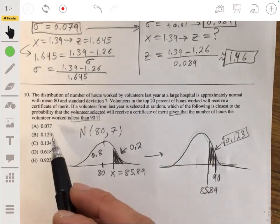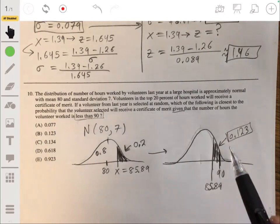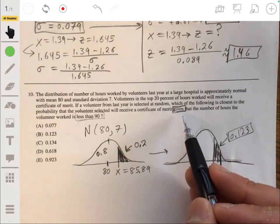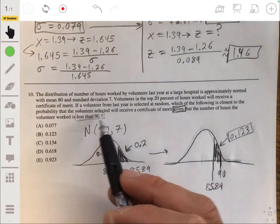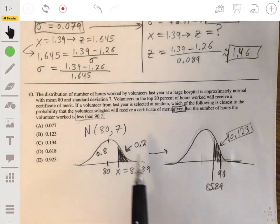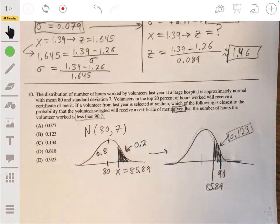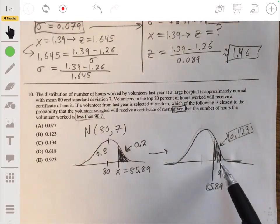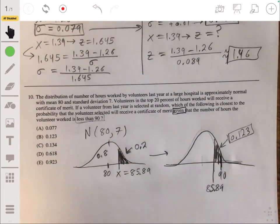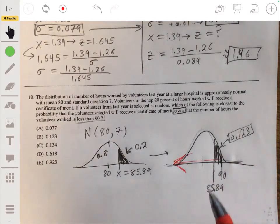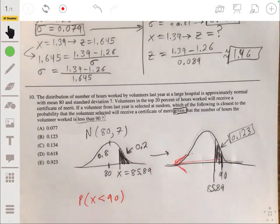Now, don't get fooled here because the initial answer that you may want to pick is B. Remember, this is a conditional probability. So we have to do one more thing because we're told on a condition. So we're told that if they're going to receive a certificate of merit, they're going to have anywhere from above 85.89 hours, but less than 90 hours. So you essentially want to then figure out what the probability is that they would just have less than 90 hours overall. What would the area to the left be? Because you're told that the condition is that they have less than 90 hours. So you want to find what's the probability that x is less than 90.